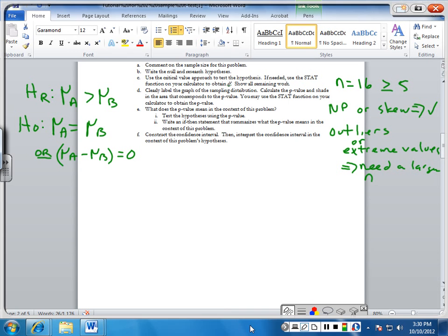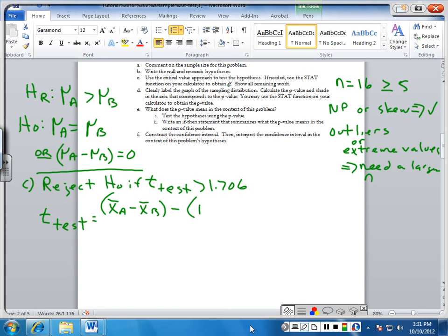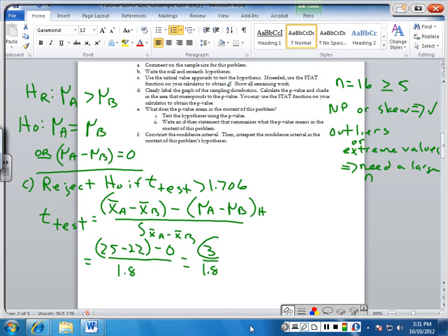So using the degrees of freedom and everything we already looked up, for the critical value approach, I'm on to C now. We're going to reject the null hypothesis if T test is greater than 1.706. The T test is equal to the statistic X bar A minus X bar B minus the hypothesized parameter divided by the standard error and all that's equal to 25 minus 22 minus 0 over 1.8. 3 over 1.8. I want you to think of this as one number, so I'll go ahead and subtract it out there.